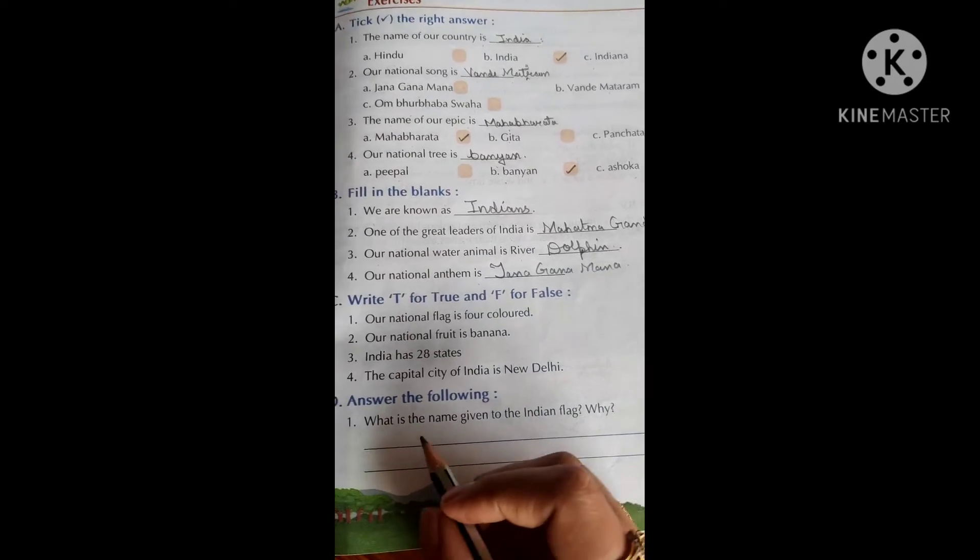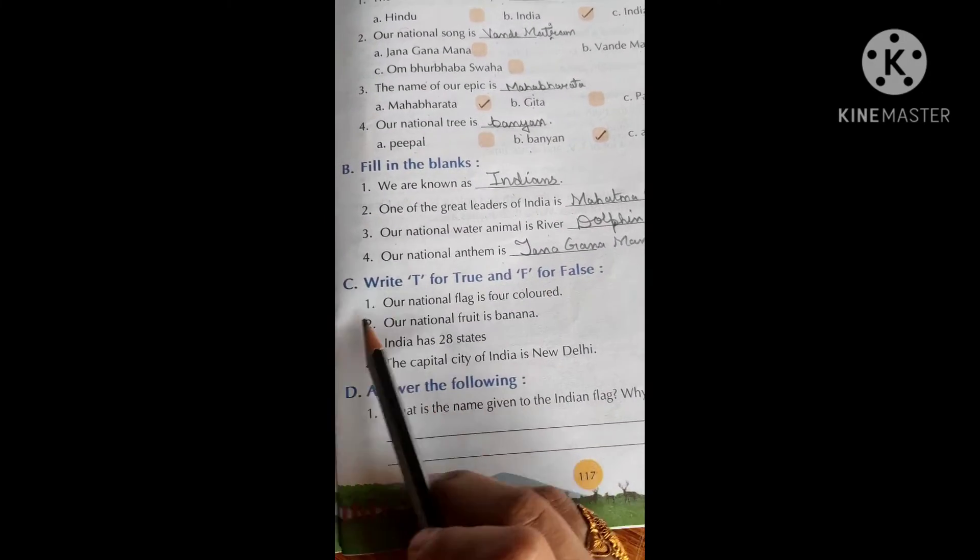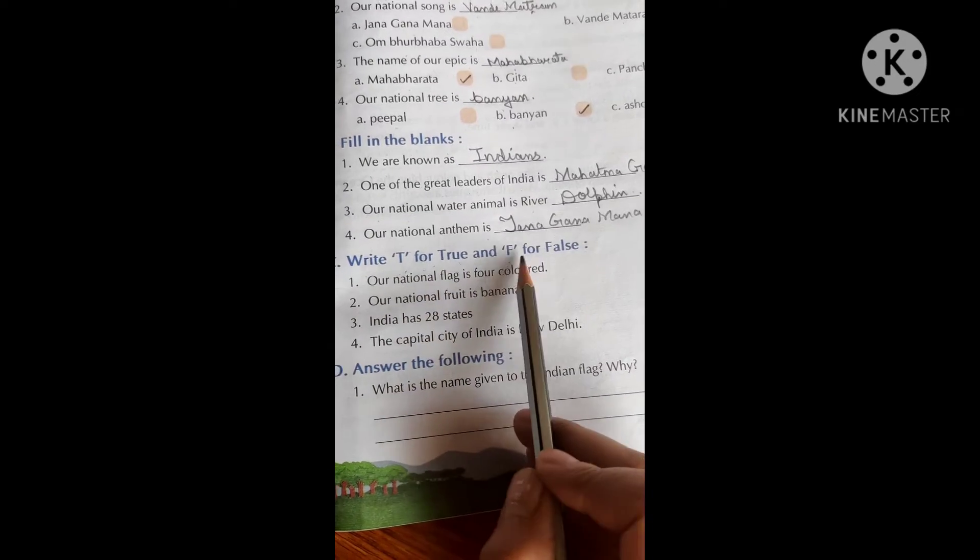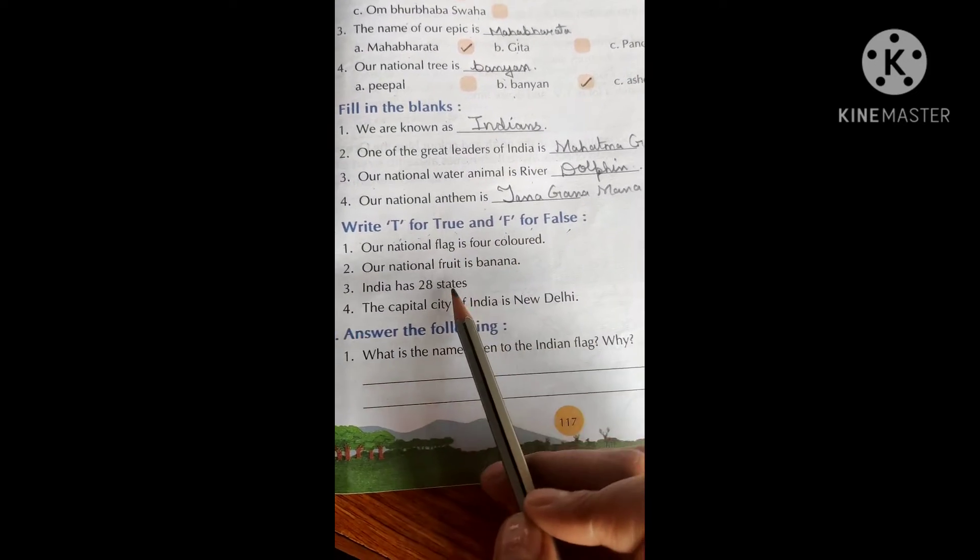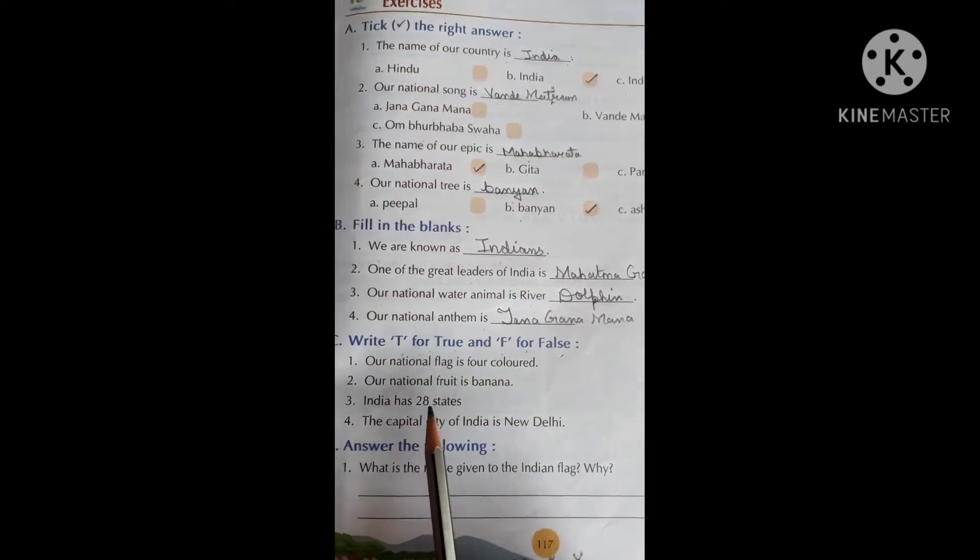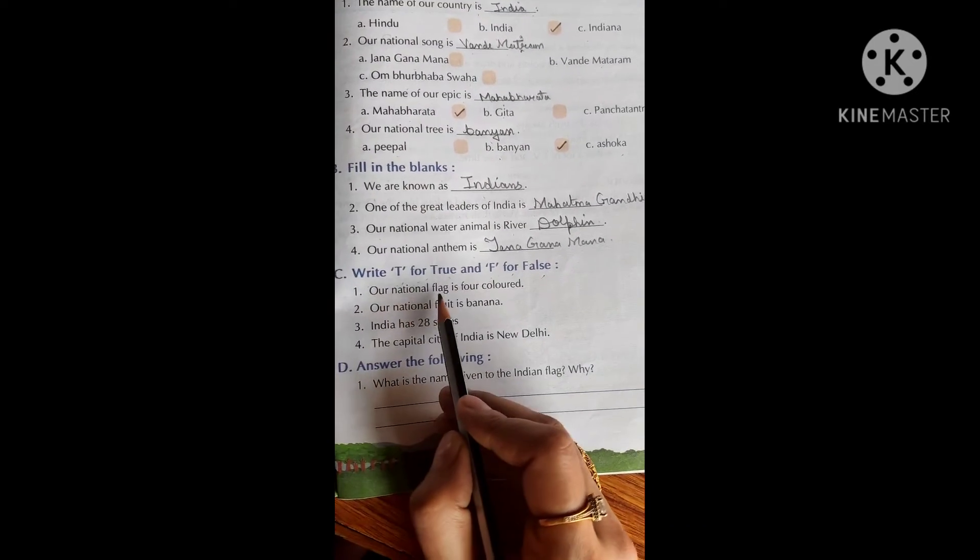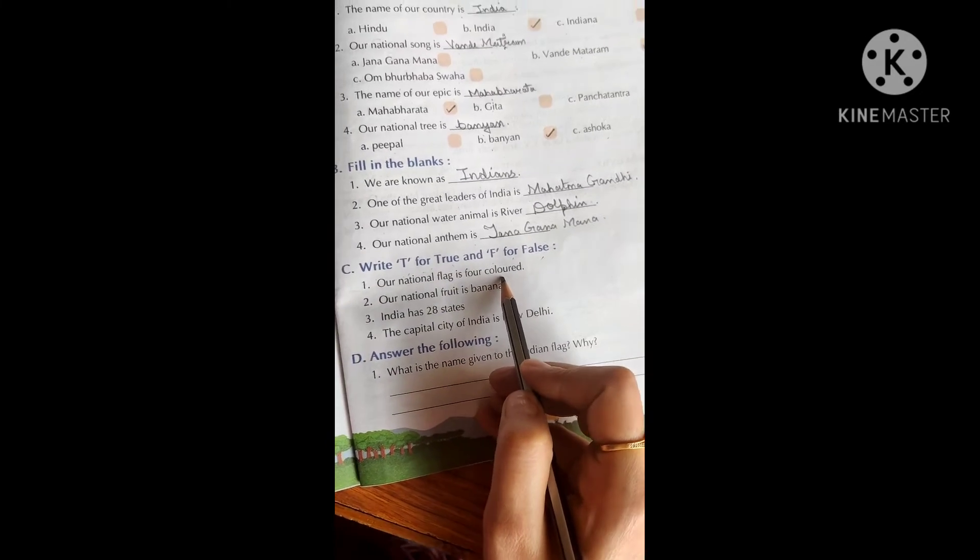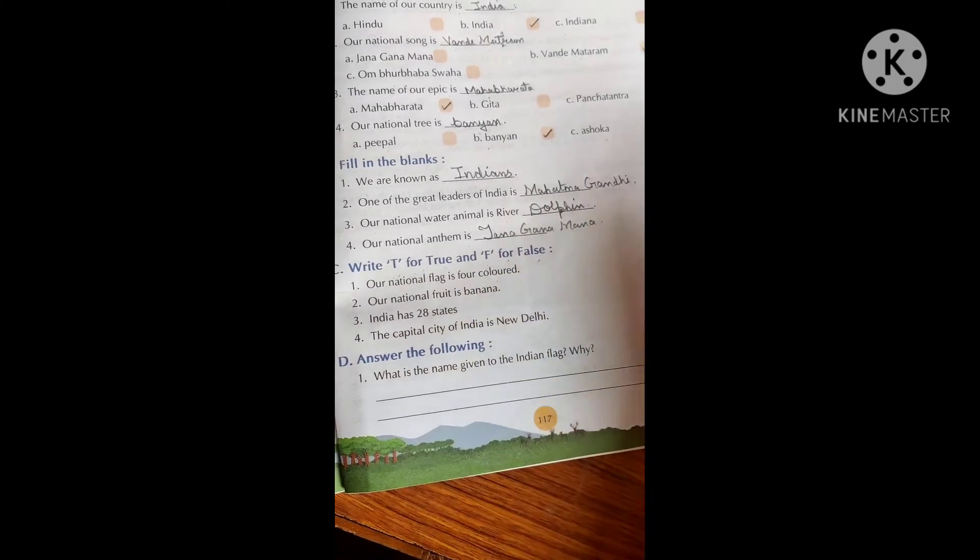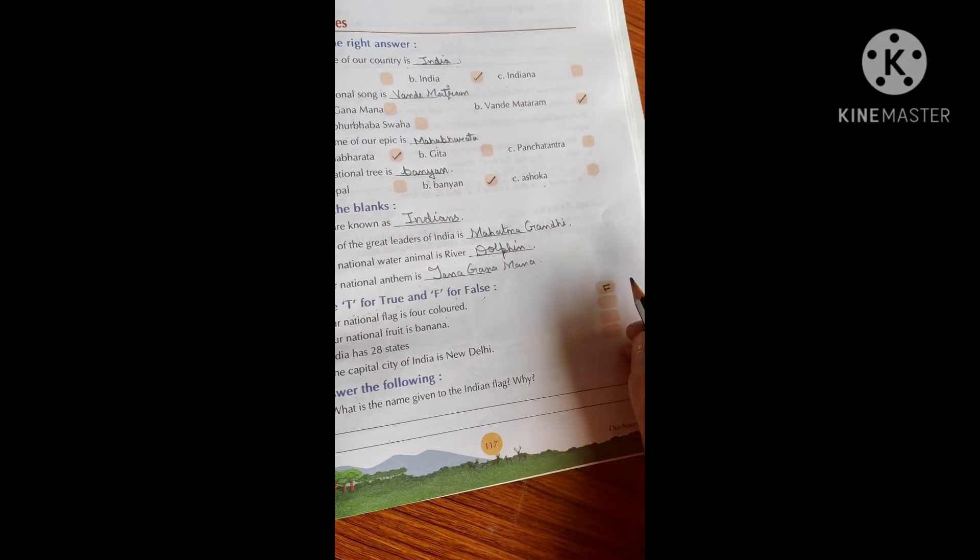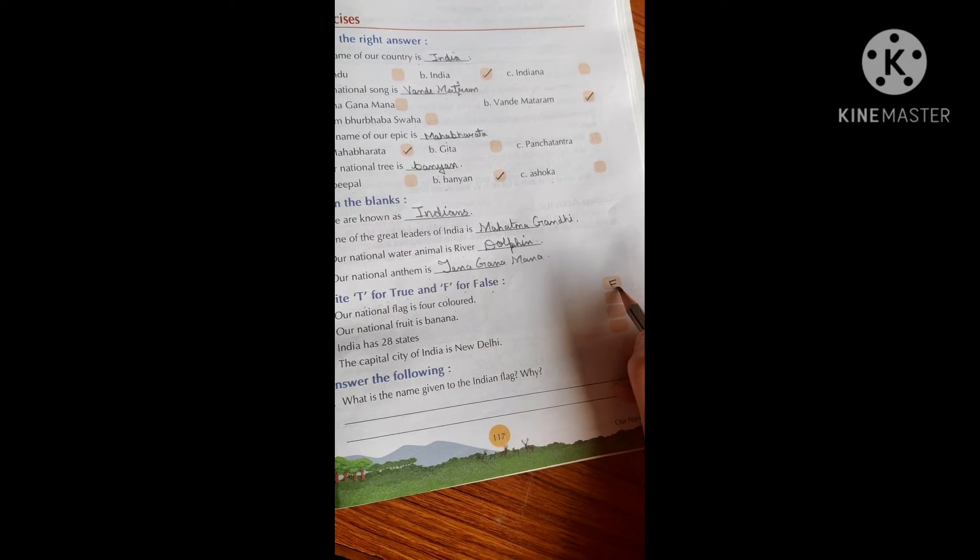So next is C part: Write T for true and F for false. True or false. So let's start. Our national flag is four colored. Is our national flag four colored? No, it's three colored. So this is false. So we will write F here.